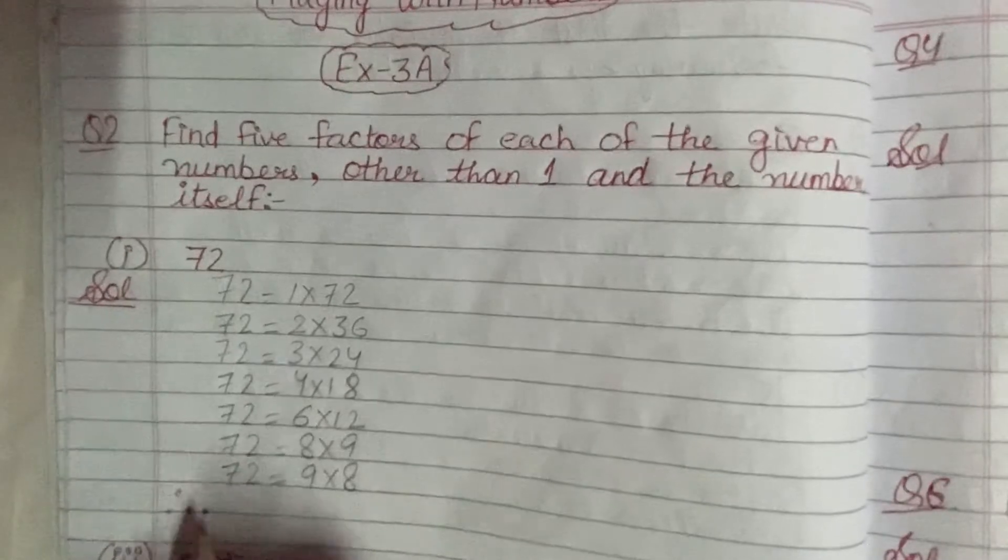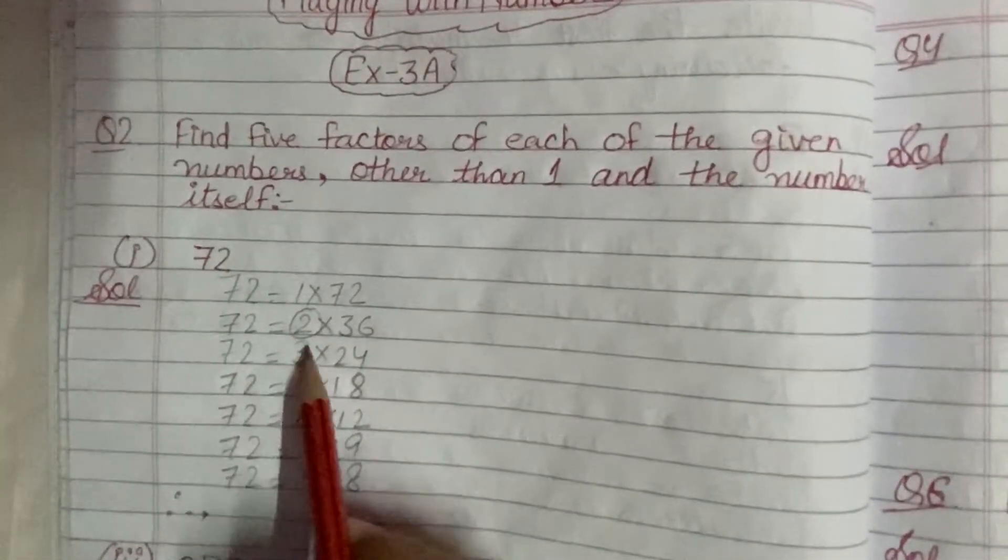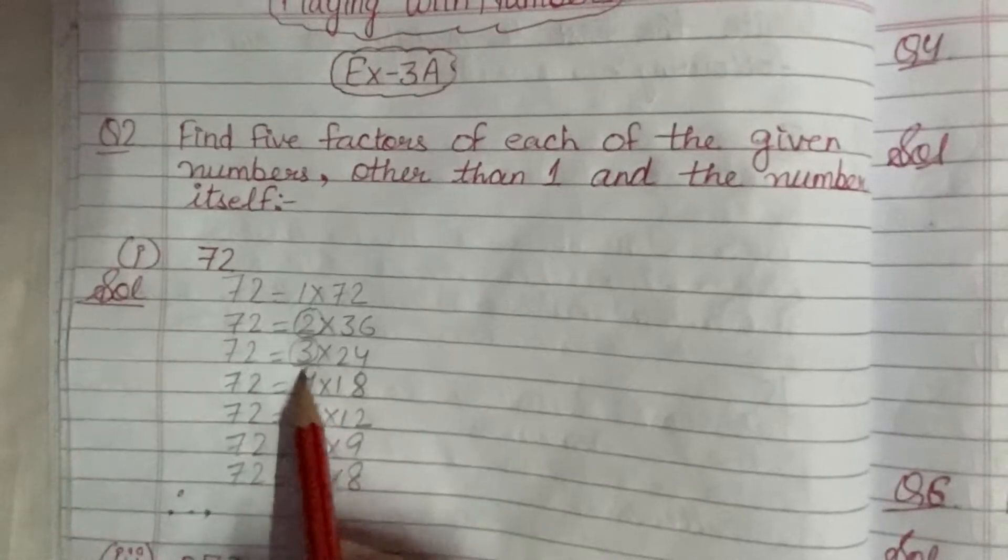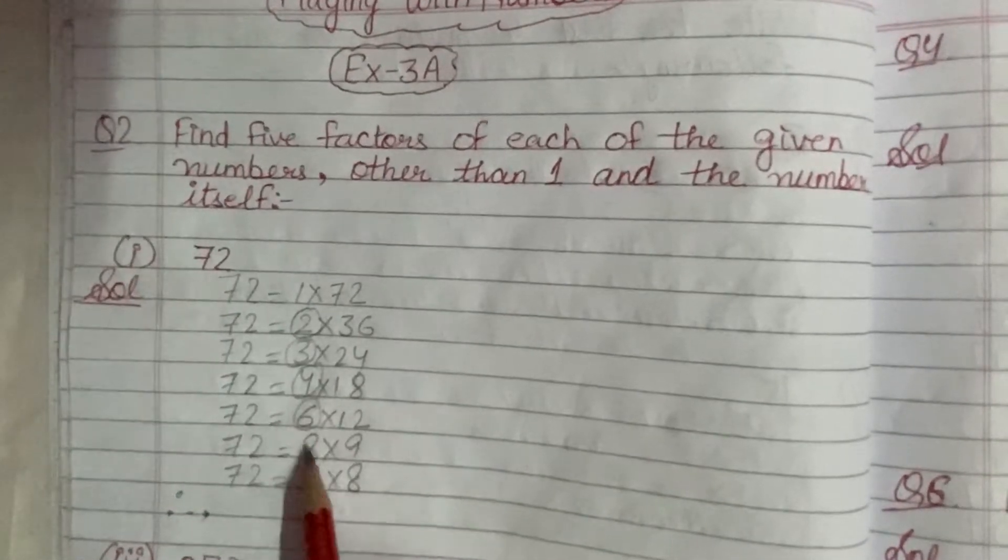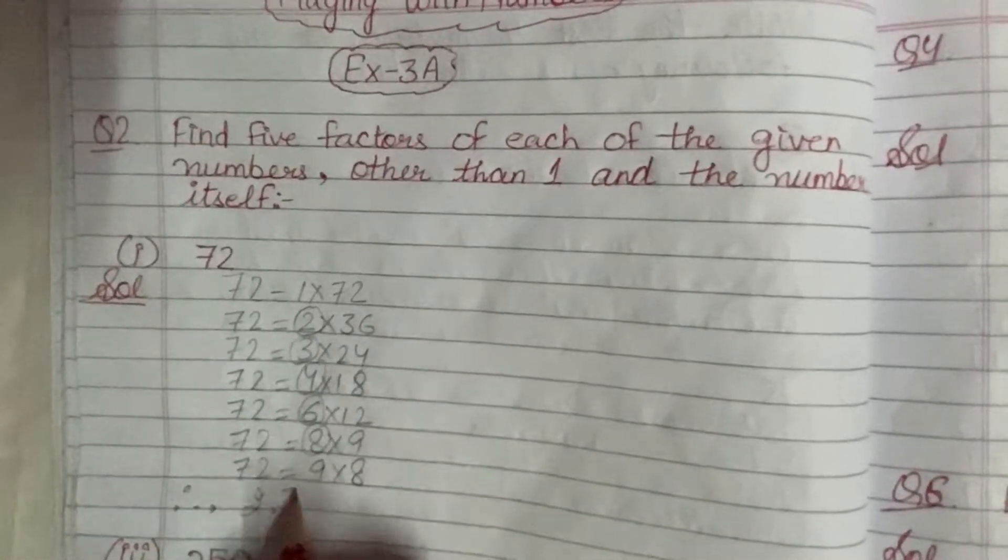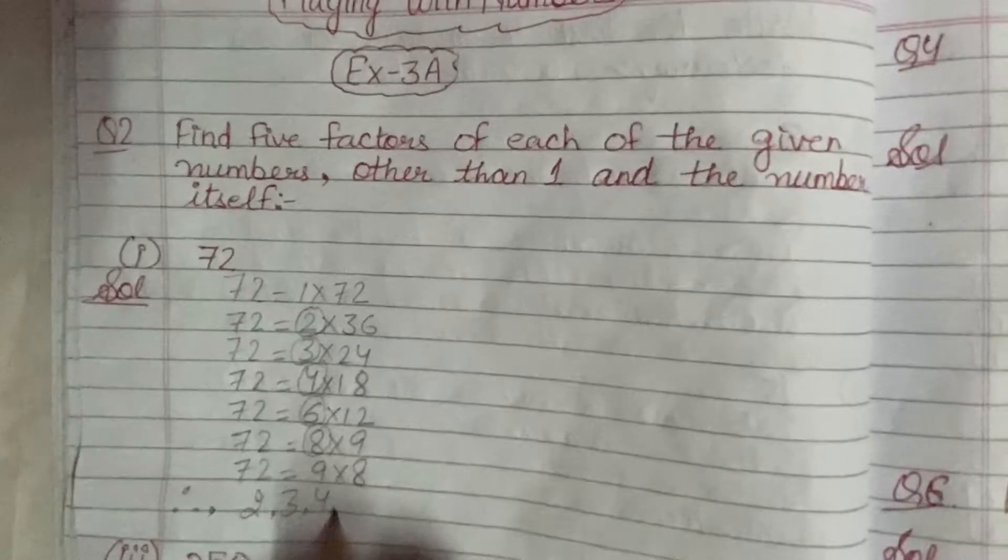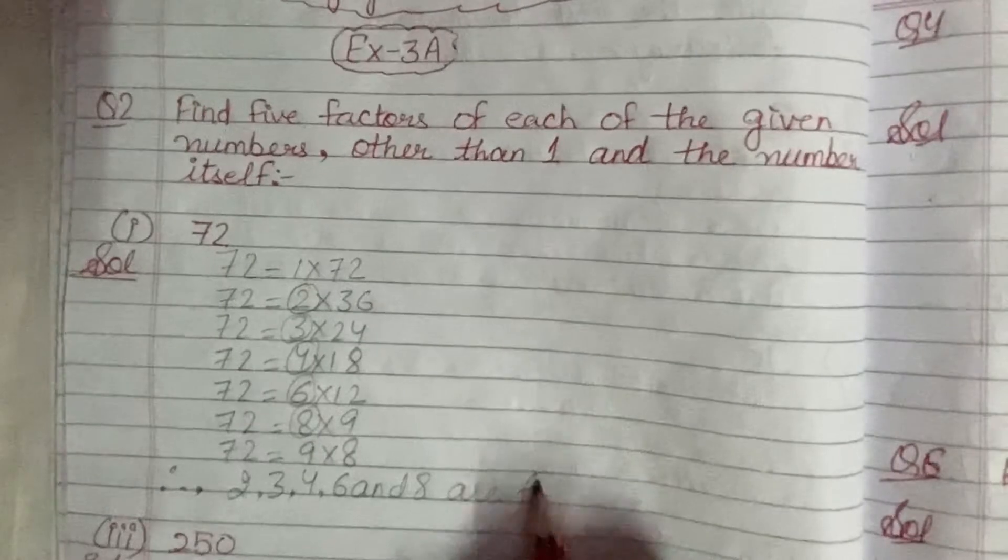Therefore, you can take the first factor as 2, second as 3, third as 4, fourth as 6, and fifth as 8.